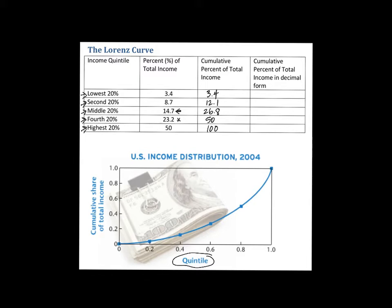We don't graph things in percent, so we plot them in decimal form. The cumulative values convert to: 0.034, 0.121, 0.268, 0.5, and 1.0. Now I'm going to plot these on a set of coordinate axes.